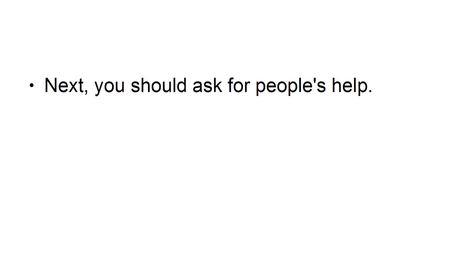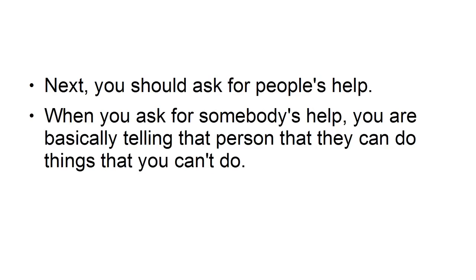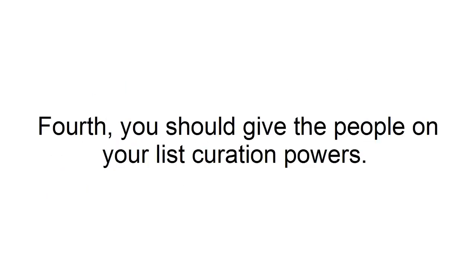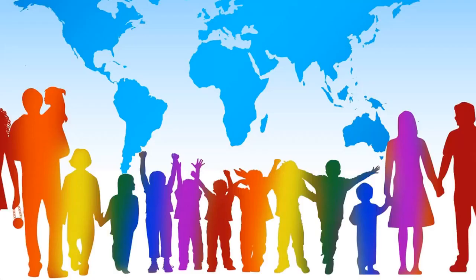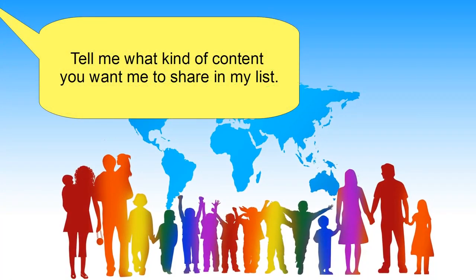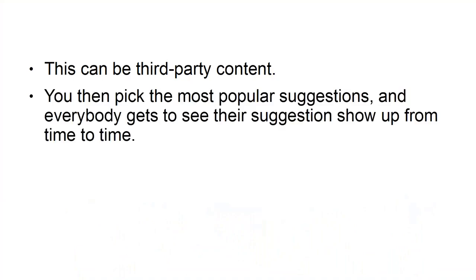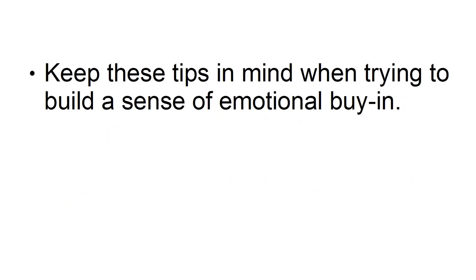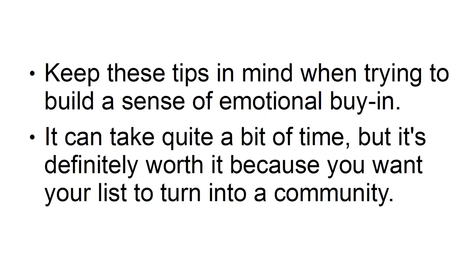Next, you should ask for people's help. When you ask for somebody's help, you are basically telling that person they can do things that you can't — this makes people feel important. Fourth, give the people on your list creation powers. This is a form of crowdsourcing where you tell people what kind of content they want you to share. You pick the most popular suggestions and everybody gets to see their suggestion show up. Keep these tips in mind when building a sense of emotional buy-in — it takes time but it's worth it because you want your list to turn into a community.